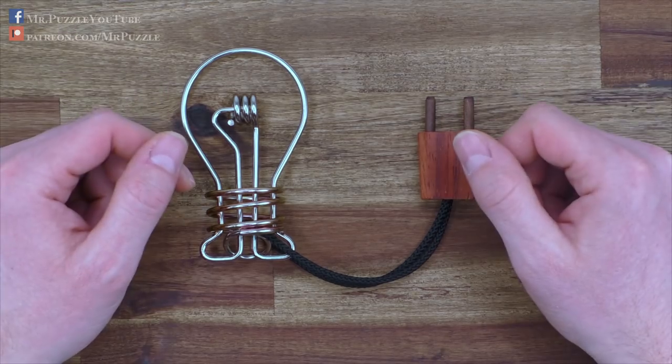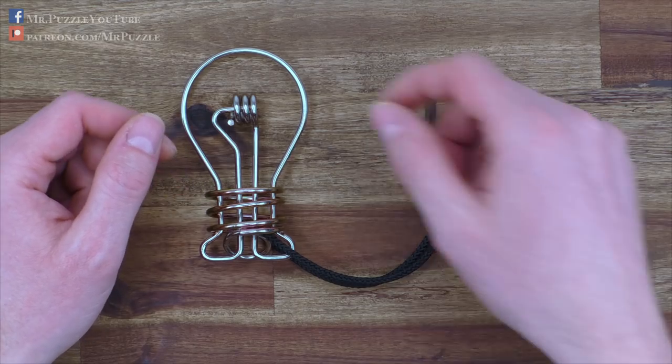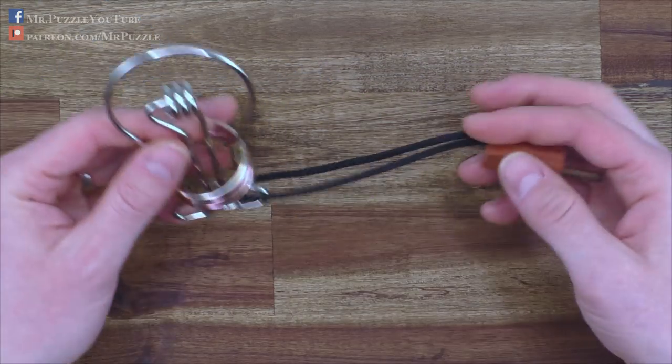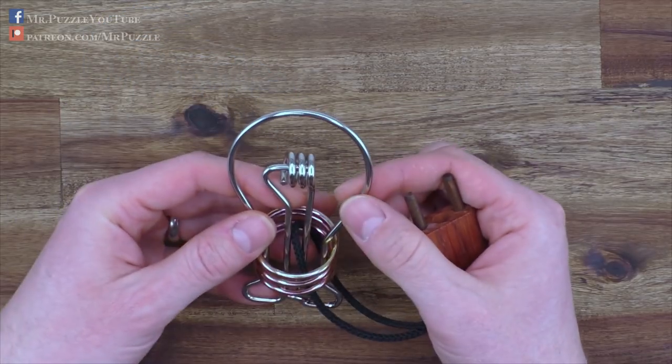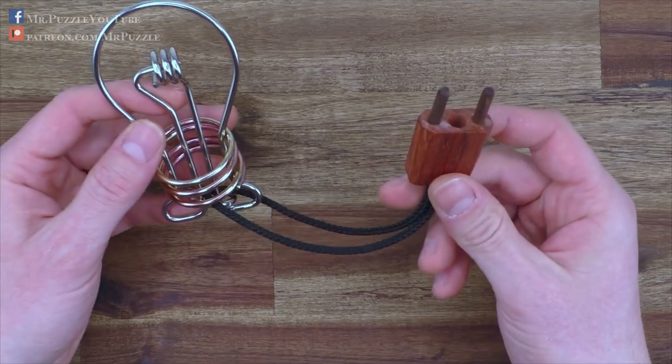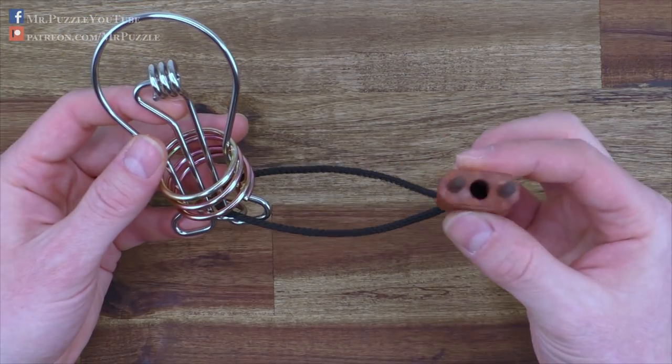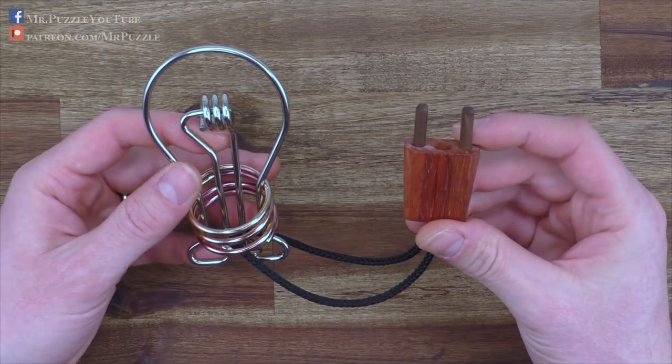It's made by the company Konstantin in Germany and consists of two parts. A light bulb that is bent out of a three millimeter steel wire and the other part is this cord, and to the end of the cord there's connected this power plug.